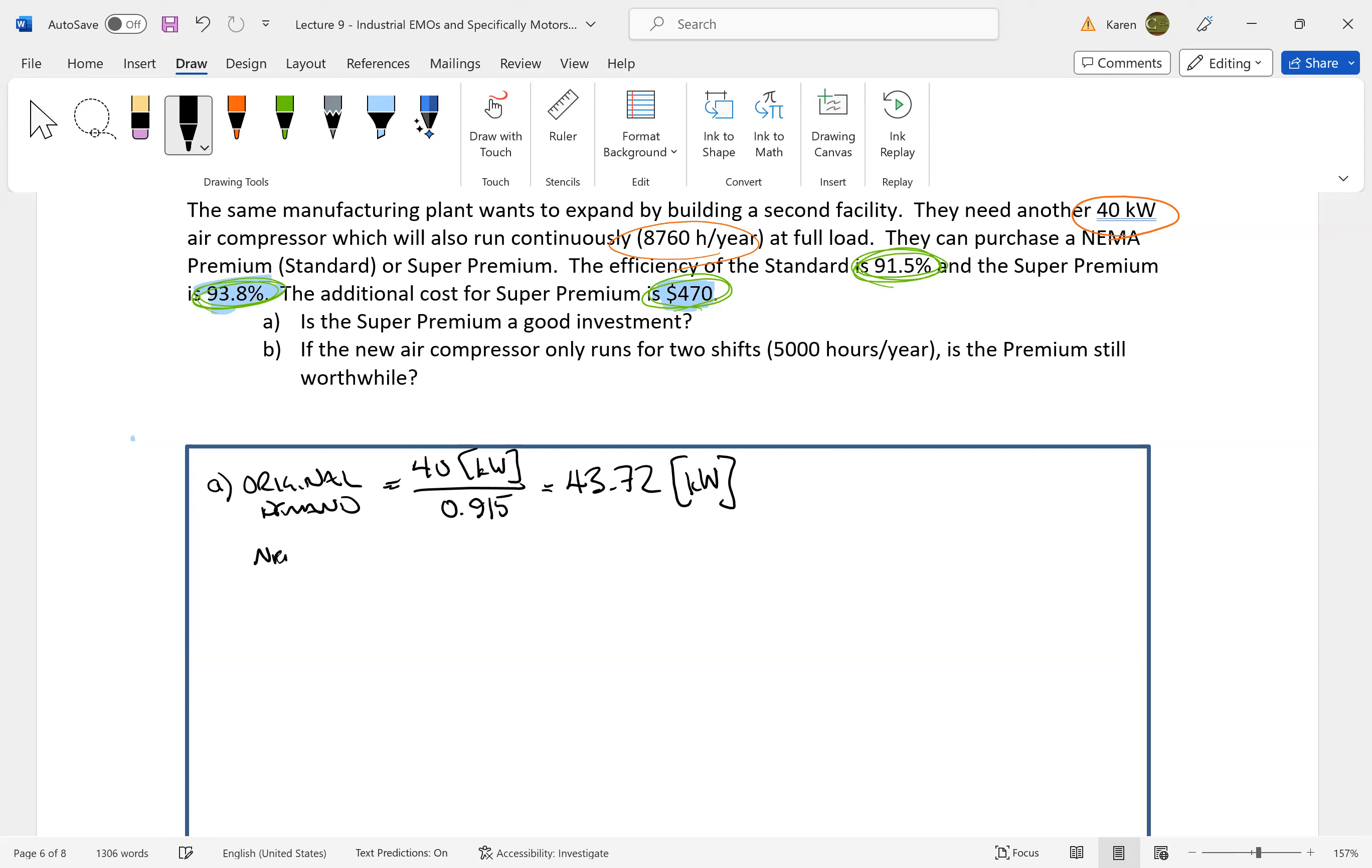The new demand is a 40 kilowatt motor at 93.8% efficiency, which will cost 42.64 kilowatts. So the demand savings is the difference between those two, which will be 1.1 kilowatts.